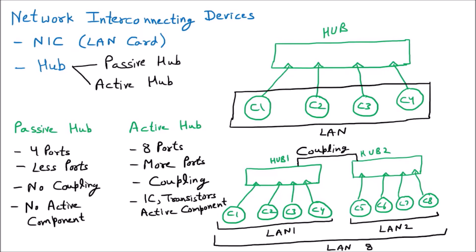One very good feature of the active hub is the repeater. The repeater is present to modify or boost signals if they are lost. In the passive hub there is no repeater, so there is no signal booster. In the active hub, a repeater is required because when signals travel from Hub 1 to Hub 2, they may become weak and need boosting.